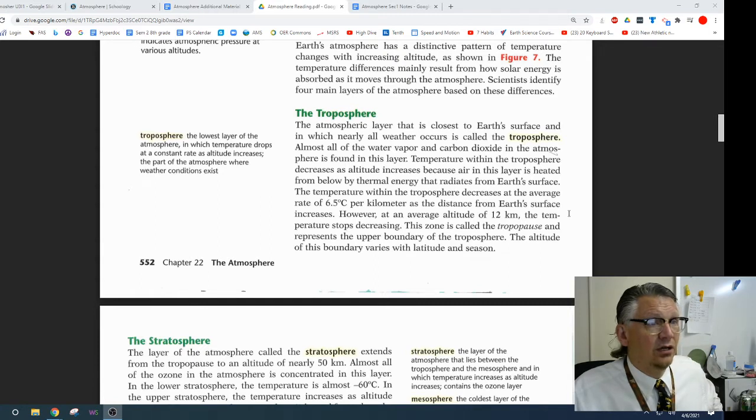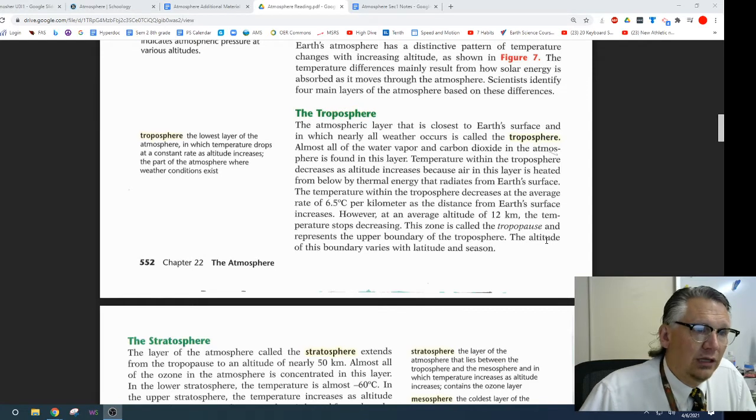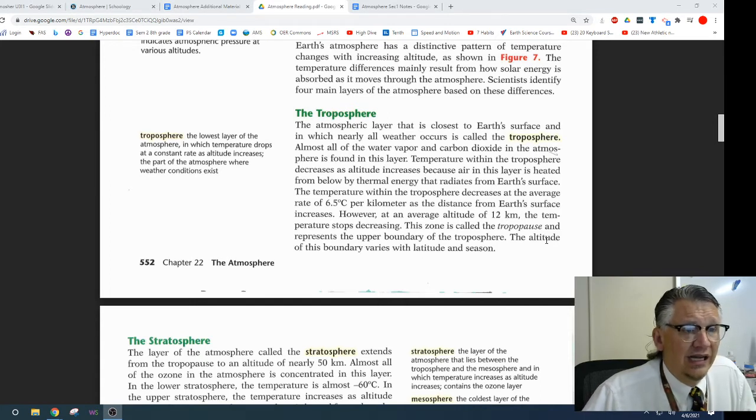The troposphere. The atmospheric layer that is closest to Earth's surface and in which nearly all weather occurs is called the troposphere. Almost all the water vapor and carbon dioxide in the atmosphere is found in this layer. Temperature within the troposphere decreases as altitude increases because the air in the layer is heated from below by thermal energy that radiates from Earth's surface. The temperature within the troposphere decreases at the average rate of 6.5 degrees Celsius per kilometer. As the distance from Earth's surface increases, however, at an average altitude of 12 kilometers, the temperature stops decreasing. This zone is called the tropopause and represents the upper boundary of the troposphere. The altitude of this boundary varies with latitude and season.